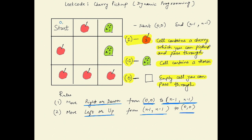So (0,0) is our starting position and (n-1, n-1) is our ending position. If no valid path exists — for example, if the path from start to end is blocked by thorns — then you simply return 0, indicating you can't collect any cherries. Otherwise you return the maximum amount of cherries you can collect.